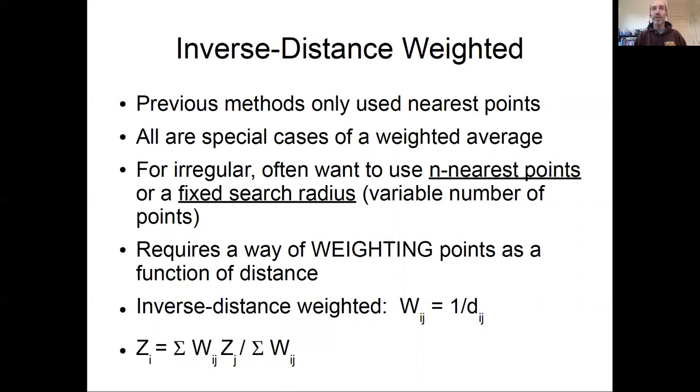If you have a bunch of points in an area, you might intuitively think, well, I want to use multiple points within a region to account for some of the noise between them, average that out a bit, smooth it out a bit. That leads us to approaches such as inverse distance weighting.